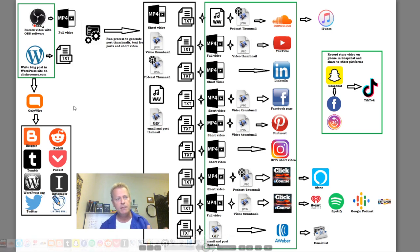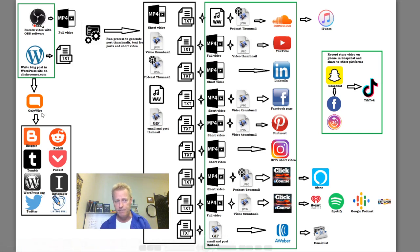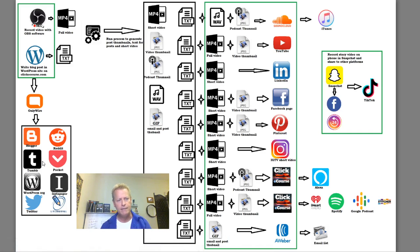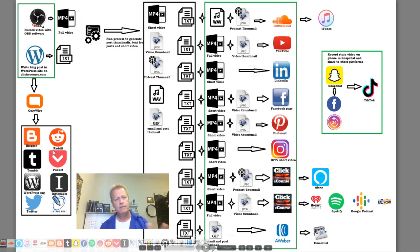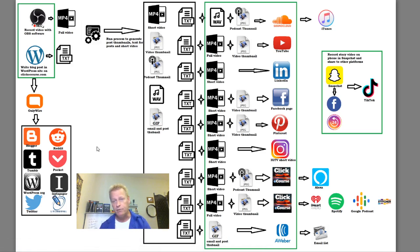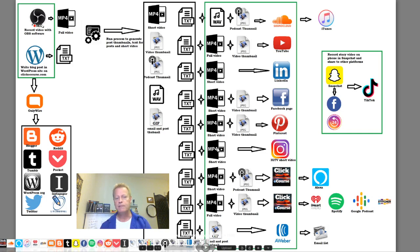Once I publish my blog post and the video is uploaded, OnlyWire picks it up and syndicates it automatically to Blogger, Reddit, Tumblr, Pocket, Instapaper, LiveJournal, WordPress.org, Twitter, and also re-syndicates to Facebook and LinkedIn. That lets me share my blog post on all those platforms.